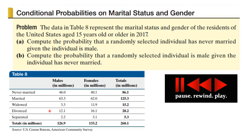Here's another problem using the same data, but now I'm asking you to do it. I want you to compute the probability that a randomly selected individual has never married given that they are male. And compute the probability that a randomly selected individual is male given that the individual has never married.